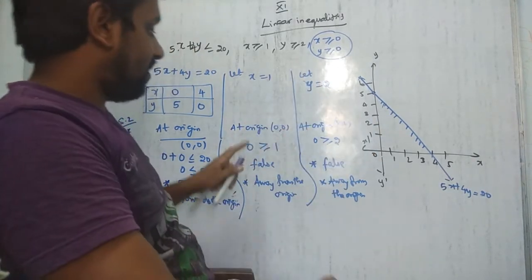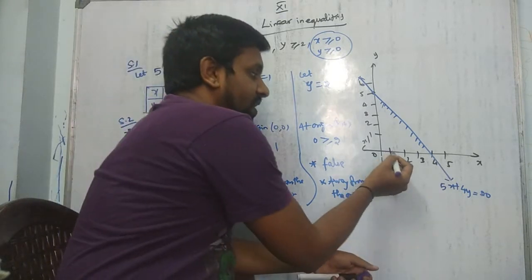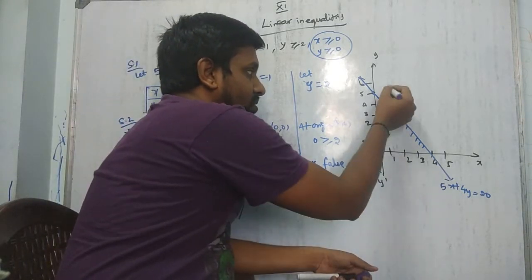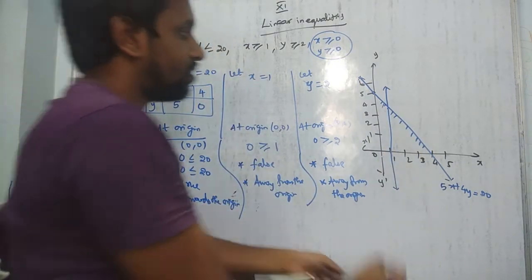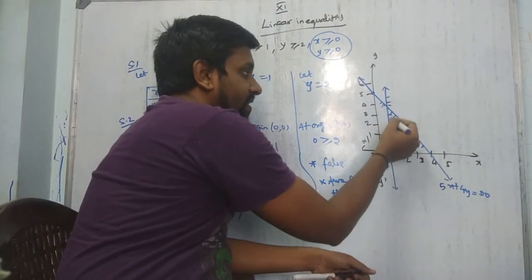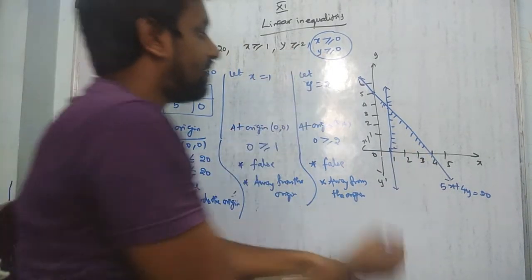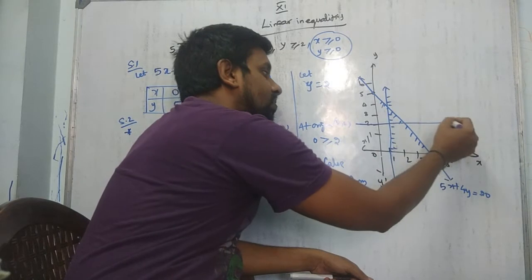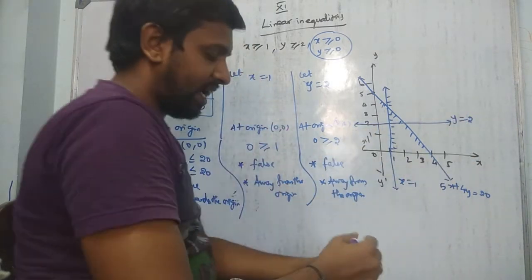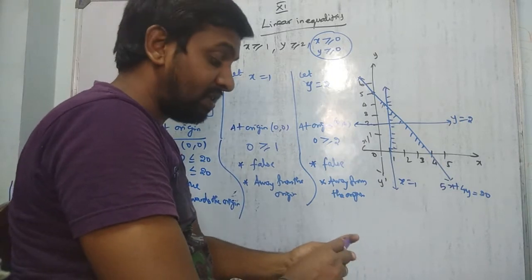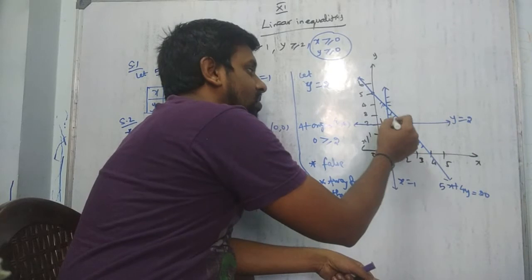Since we have two more equations, draw the line x = 1 (a vertical line at x = 1) labeled L2. The check at origin gave false (0 ≥ 1 is false), so shade away from the origin — that is, to the right. Similarly, draw y = 2 (a horizontal line at y = 2) labeled L3. Origin check: 0 ≥ 2 is false, so shade away from the origin — upward. Be very specific and label all lines clearly.